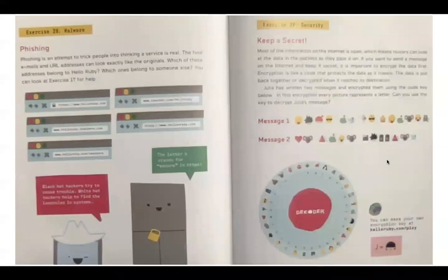Exercise 28. Malware. Phishing. Phishing is an attempt to trick people into thinking a service is real. The fake emails and URL addresses can look exactly like the originals. Which of these addresses belong to Hello Ruby? Which ones belong to someone else? You can look at exercise 17 for help.